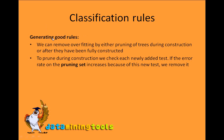To generate good rules, sometimes based on training data we might overfit our rules. To avoid that, we can remove overfitting by pruning — either during construction or after full construction. To prune during construction, we check each newly added test against its error rate on a pruning set — an entirely different set used for pruning. If the error increases after adding the test, we remove that test. This is how we use the pruning set.